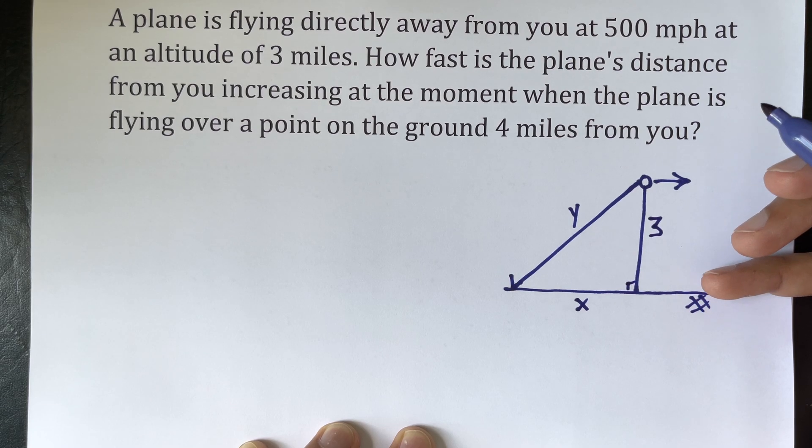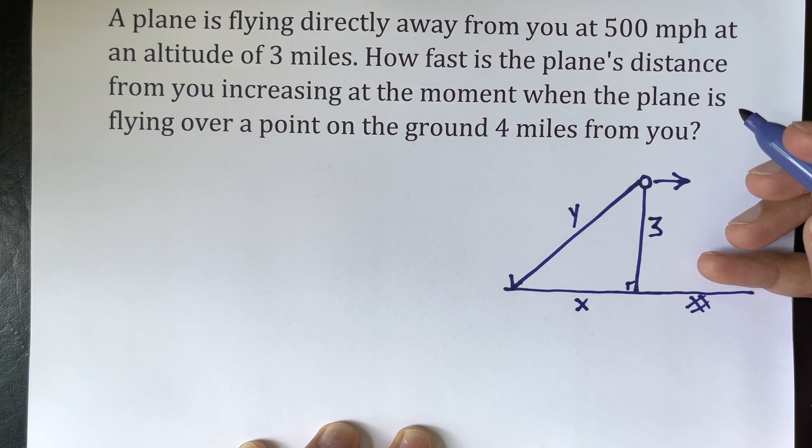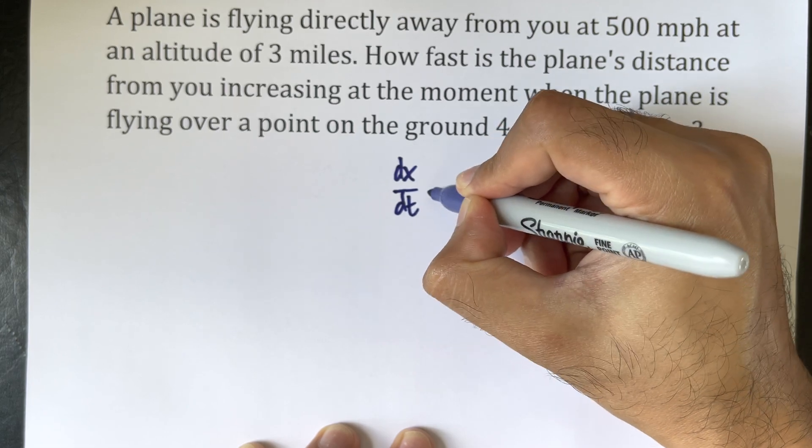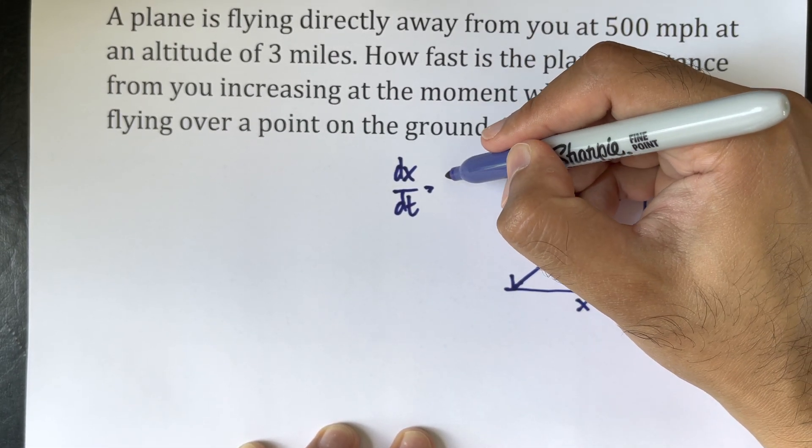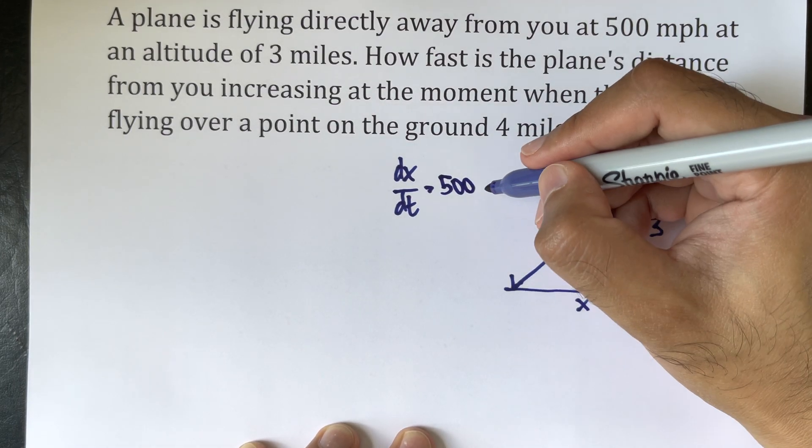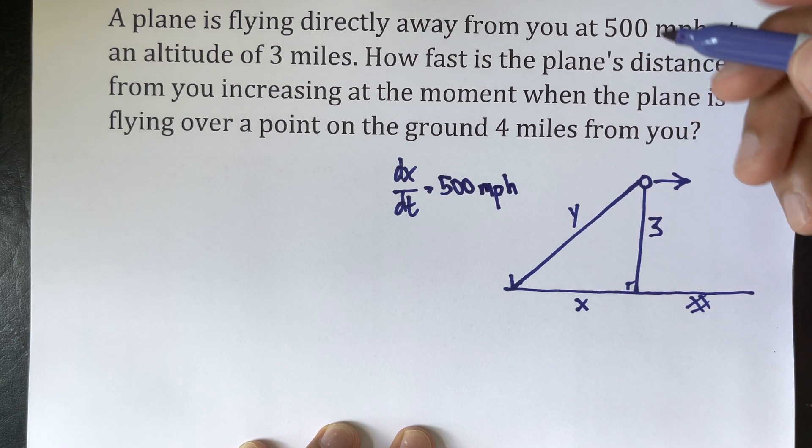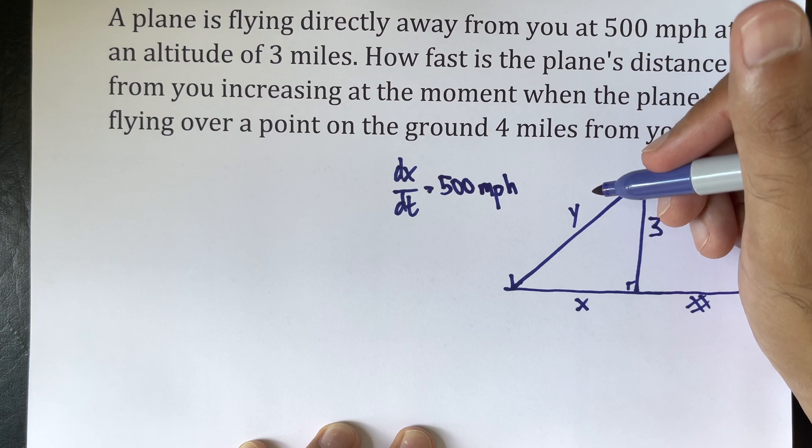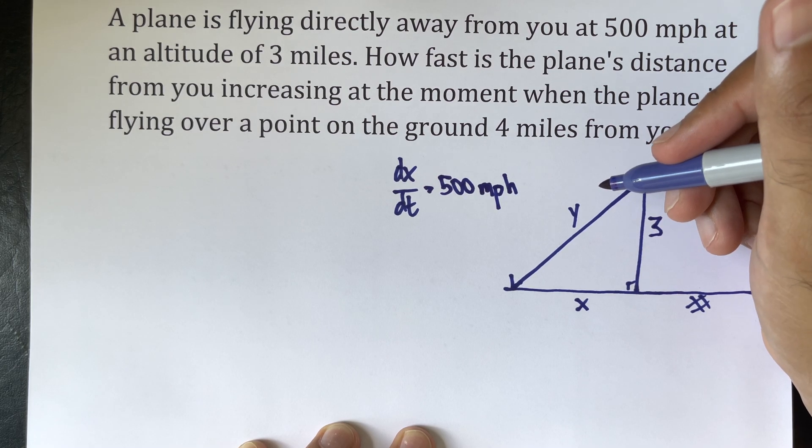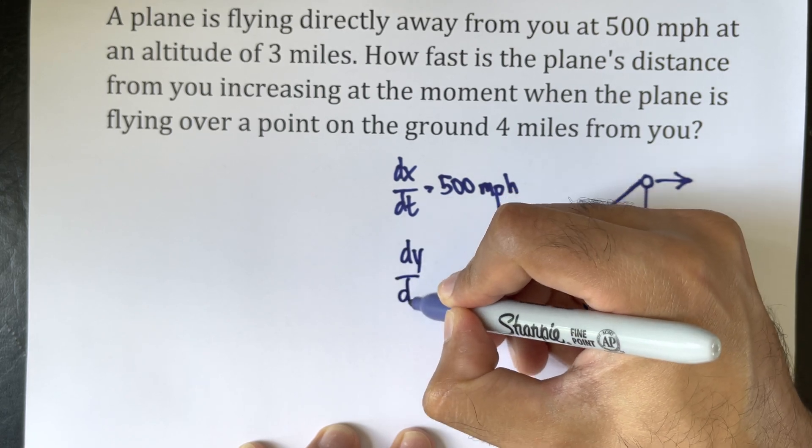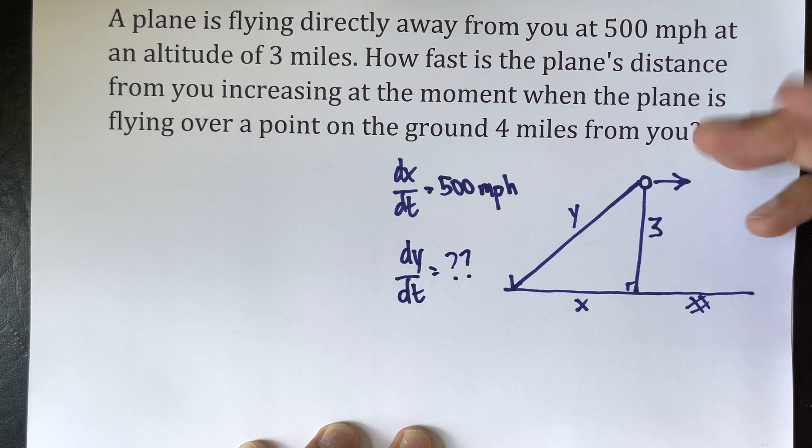I'm going to draw a right angle triangle to illustrate that, and because the plane is in level flight directly from you, the rate at which x changes is the speed of the plane. So the speed of the plane, we can say dx over dt equals 500 miles per hour. And the distance from you and the plane which we've got here as y is changing, and that is what we need to know. So we need to calculate for dy over dt - that is our end goal.